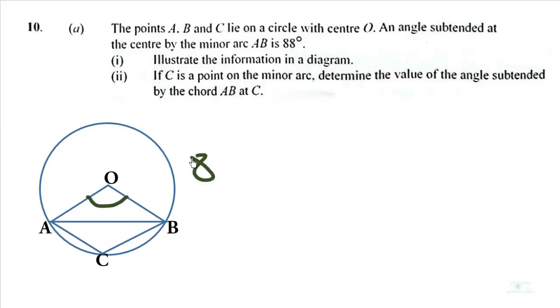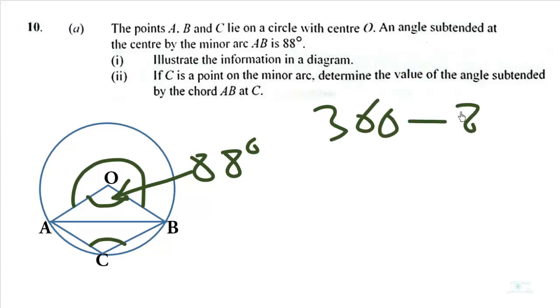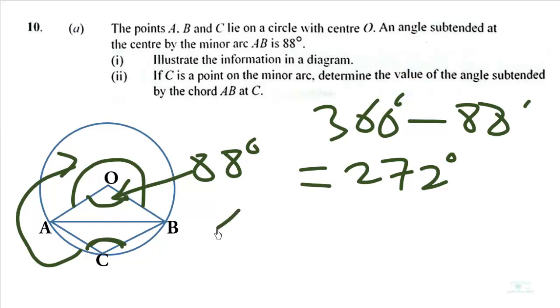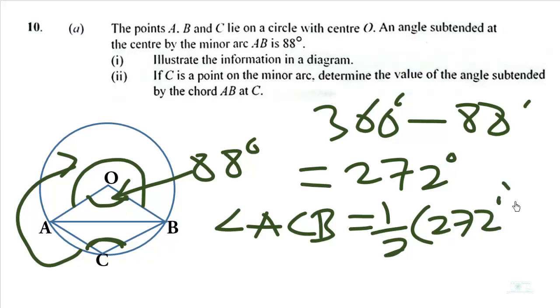Where we have 88 here, then we are finding this angle here, angle ACB. So we can calculate the angle here, which is 360 minus 88 degrees, and that will be equal to 272 degrees. Remember that the angle here is half of the angle here. Therefore, angle ACB is half of 272, and that will be equal to 136 degrees.